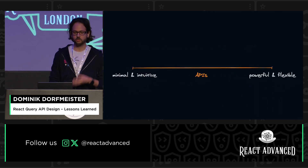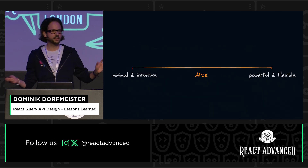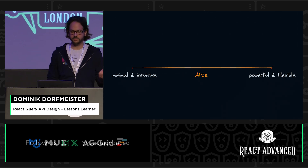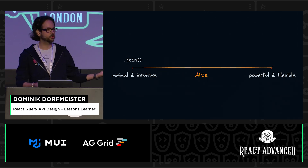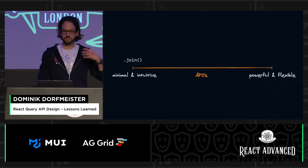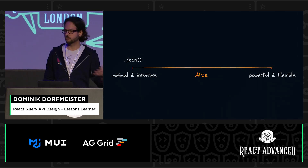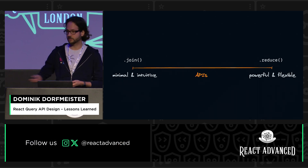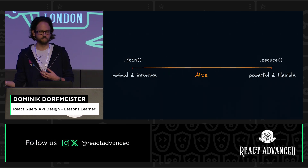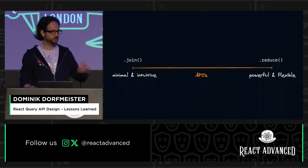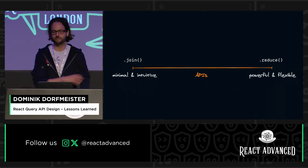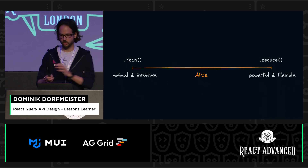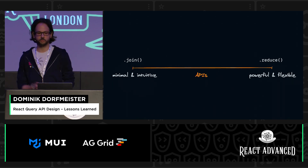For any given API, those two things are usually on the opposite sides of the same scale. If we take a look at array methods, for example — on the left-hand side we would have something like array.join, a very simple method that does one thing and does it very well. And on the other end of the spectrum, we would have something like array.reduce, which is very powerful — we can implement all other array methods just with reduce. But if this is the only thing we have available, it would probably not be great because it's also quite complicated to read from time to time.